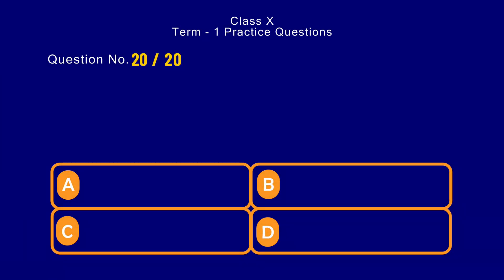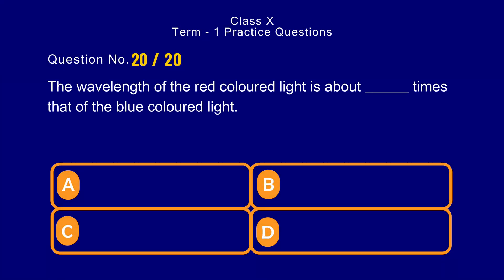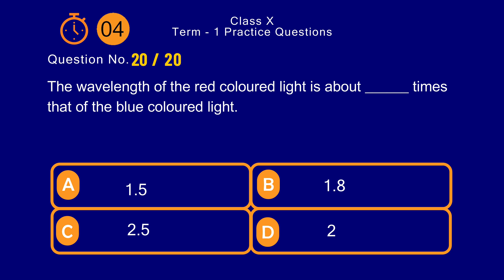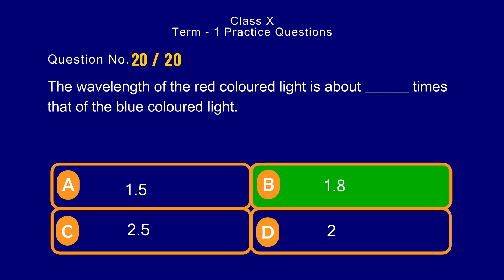Question number 20. The wavelength of red colored light is about how many times that of blue colored light? Options: a) 1.5 times, b) 1.8 times, c) 2.5 times, d) 2 times. The correct answer is option b) 1.8 times.